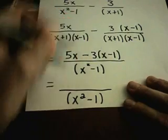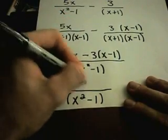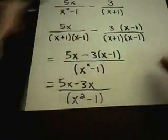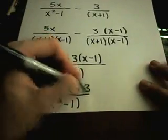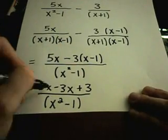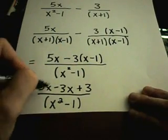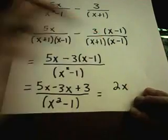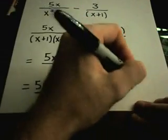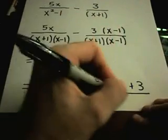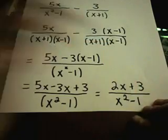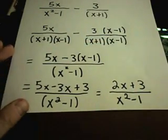Notice when I distribute negative 3 times x, I'll get minus 3x. When I take negative 3 times negative 1, I'll get positive 3. My like terms are the x terms. 5x minus 3x is 2x. I can't do anything with the plus 3 term. And then I'm left with x squared minus 1 in the denominator.